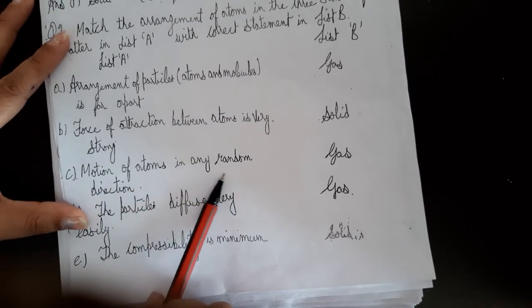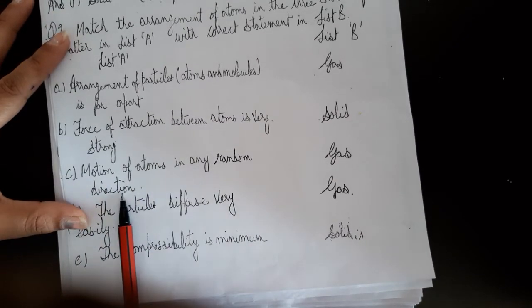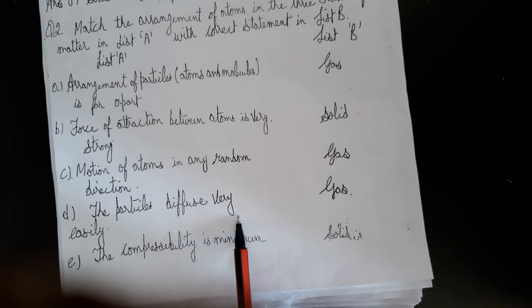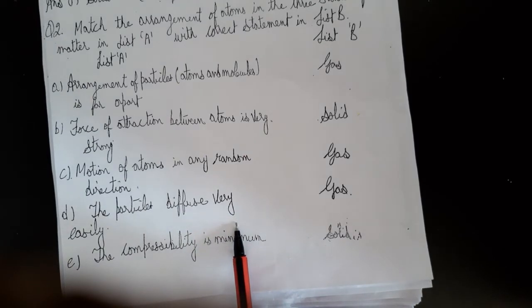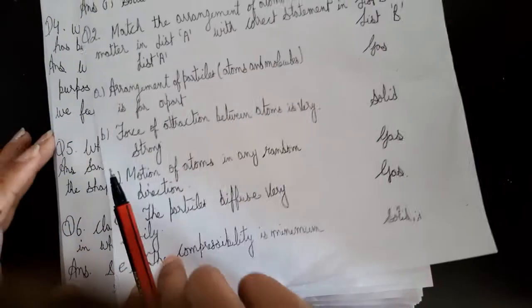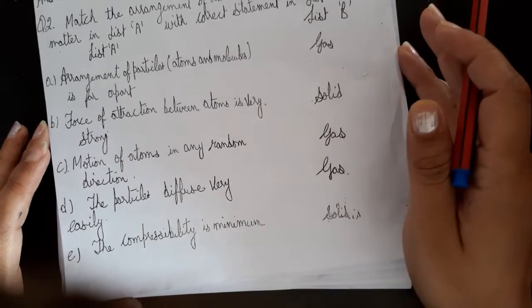Motion of atoms in any random direction — that is the gaseous state. The particles diffuse very easily, just like when you apply perfume, you can tell very quickly what perfume is being worn. Or when you light a candle, the fragrance spreads through the whole room and the whole house. That is the gaseous state.